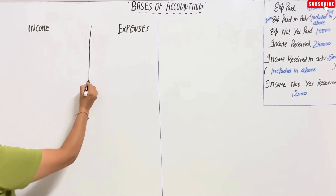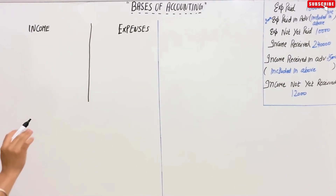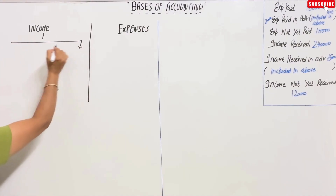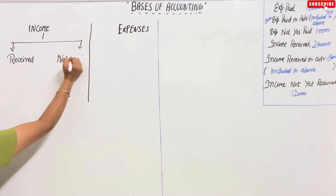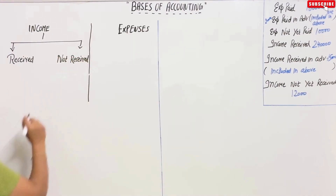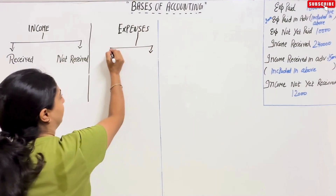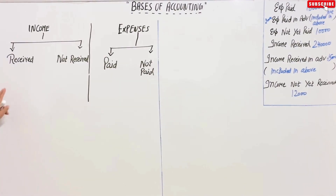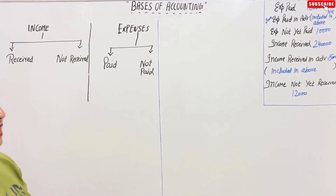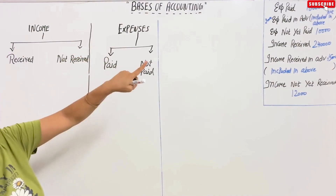Now, what will be income and expenses? For income, we will make one column for 'received' and one for 'not received.' For expenses, we will make one column for 'paid' and one for 'not paid.' Now we will fill in this chart. First, what is written? Expenses paid — how much? One lakh eighty thousand. So under expenses paid, we will write one lakh eighty thousand.